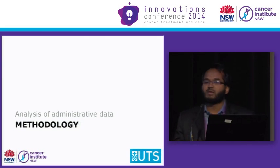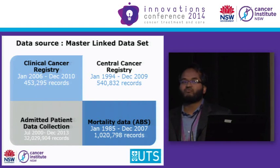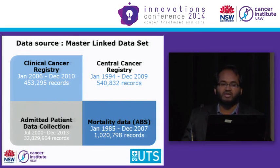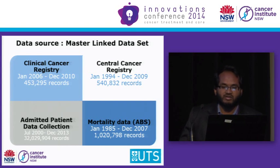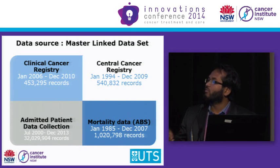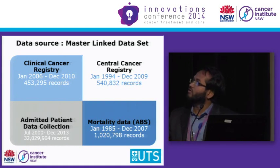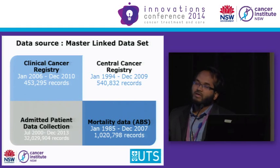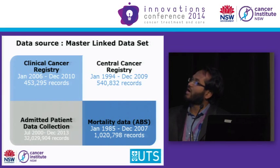Let's look at the data and some of the definitions. We use longitudinal linked data from four different registries that included the central cancer registry, clinical cancer registry, APDC, and ABS mortality. The central cancer registry includes data from all the cancer diagnoses across New South Wales. The clinical cancer registry includes data from patient treatment, and APDC consists of data from all the hospitalizations of cancer patients. Mortality information comes from the mortality data.